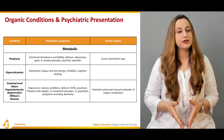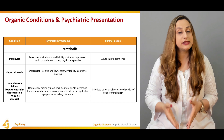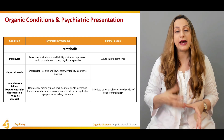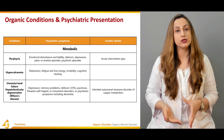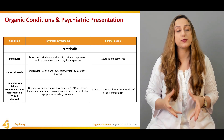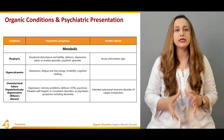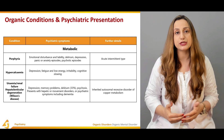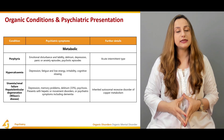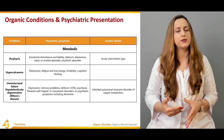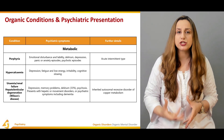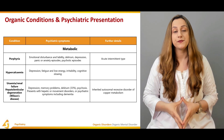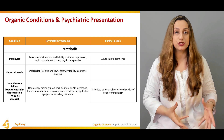Porphyrias can present as emotional disturbances and liability, delirium, depression, panic or anxiety episodes, and even psychotic episodes. It is basically of an acute intermittent type, meaning the disease is acute and intermittent rather than a continuous process. Hypercalcemia is another condition presenting with depression, fatigue, low energy, irritability, and cognitive slowing — another organic cause of psychiatric presentation.